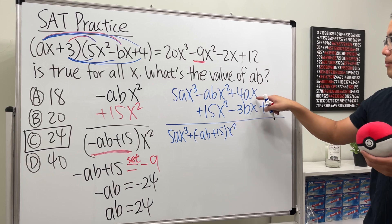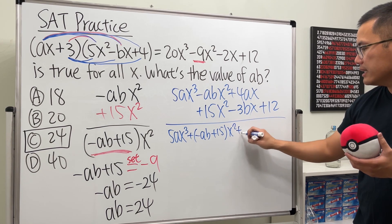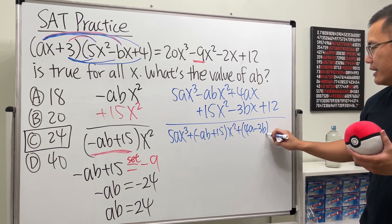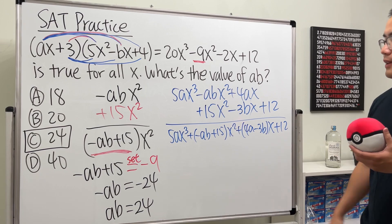and then do the same thing here. Combine this, and we will factor out the x. So, we will add 4a minus 3b, and then x. And lastly, we have the 12.